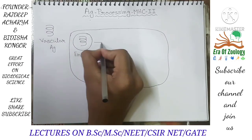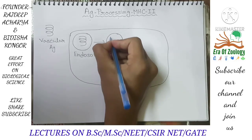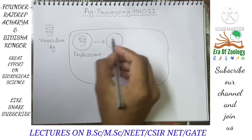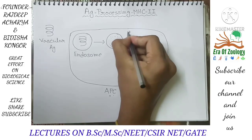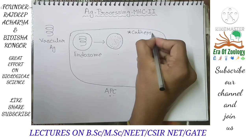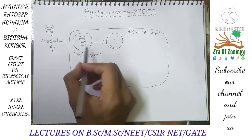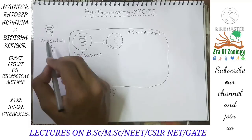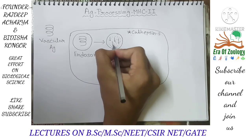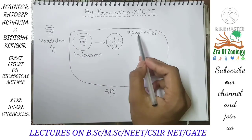In the next step, many lysosomal vesicles will attach to this endosome. Then the important enzyme cathepsin S will come and it will degrade the foreign antigen into small peptides. So basically the small peptides are generated from the foreign antigen by the help of cathepsin S.